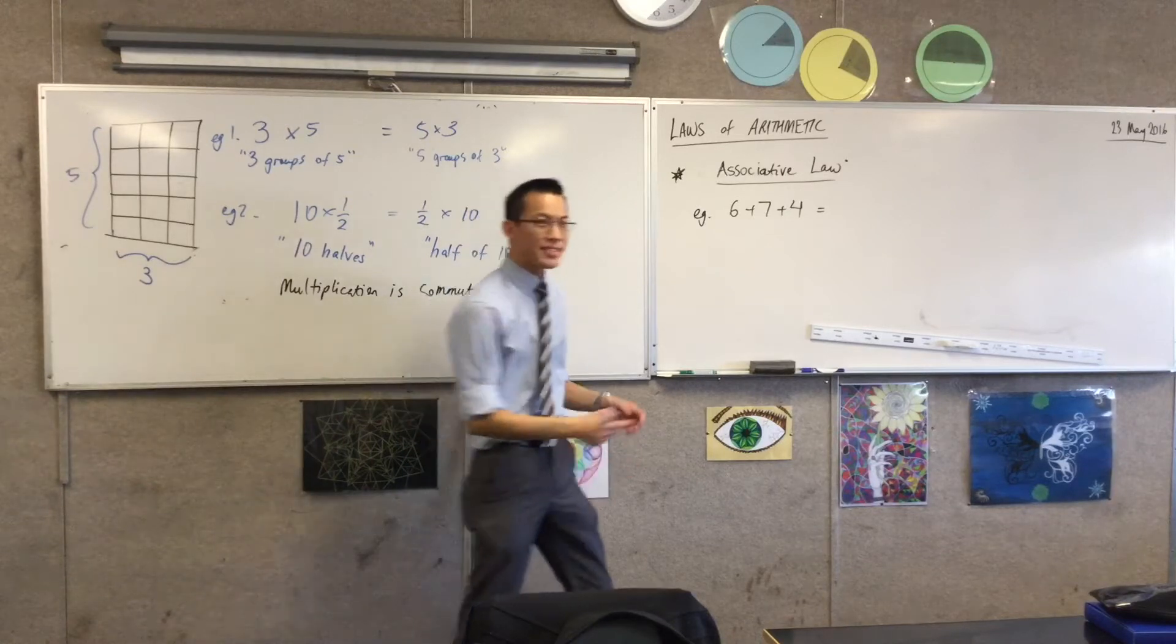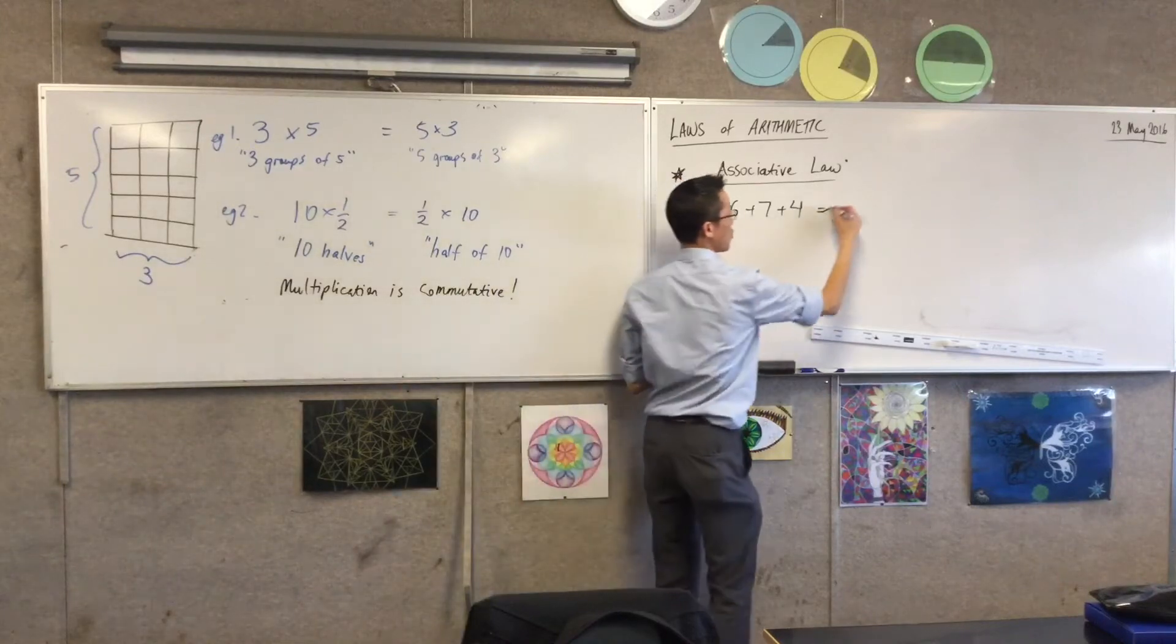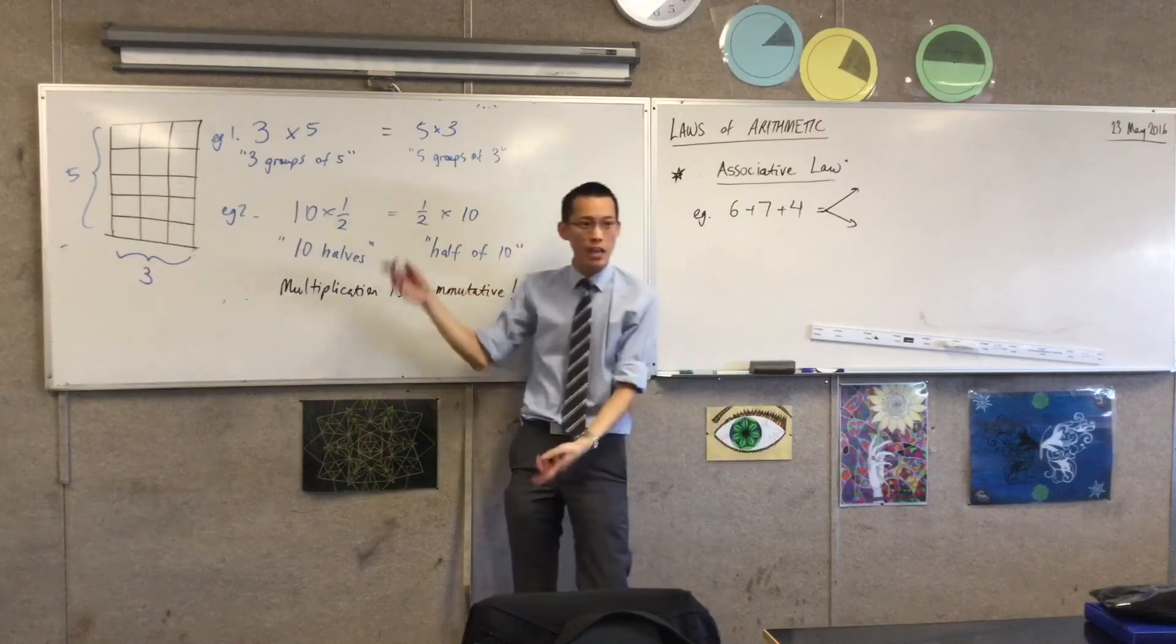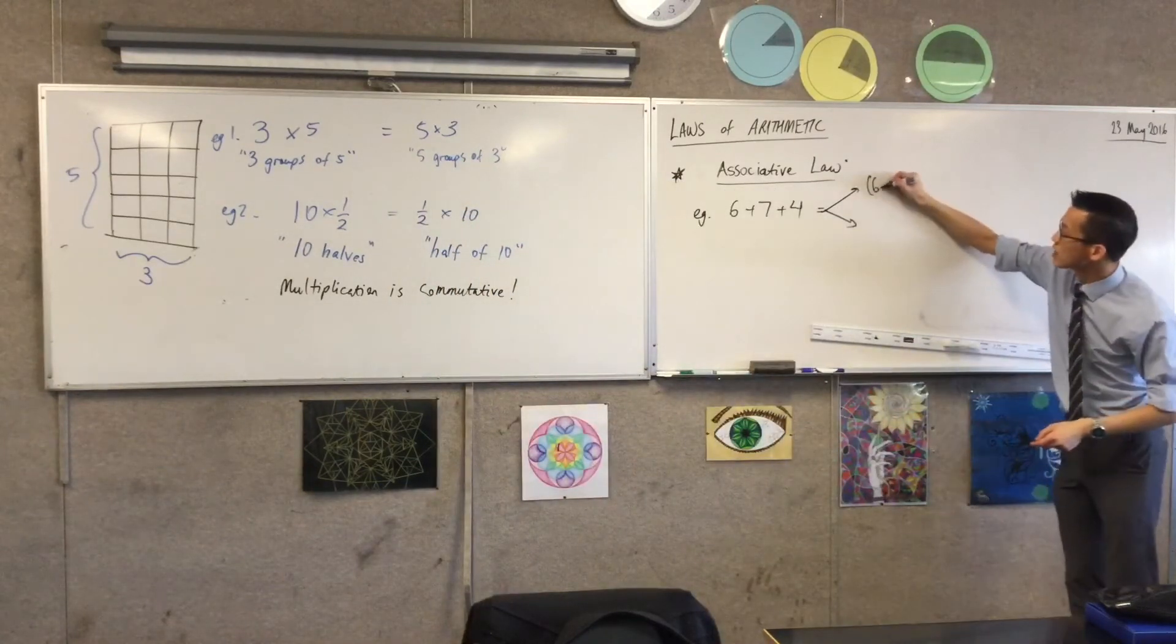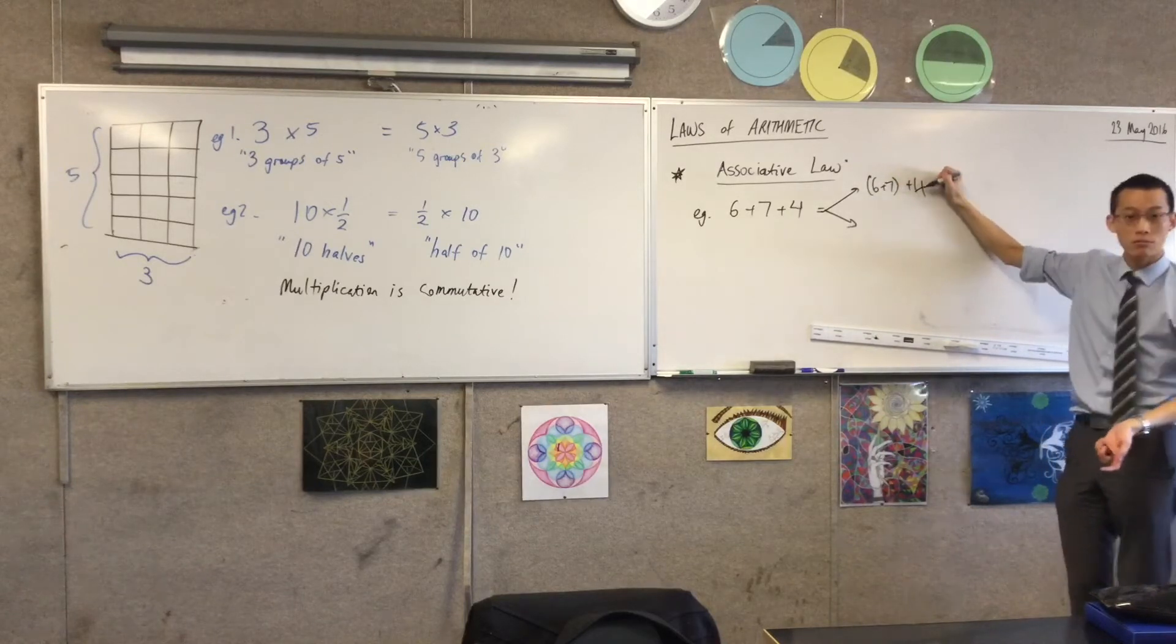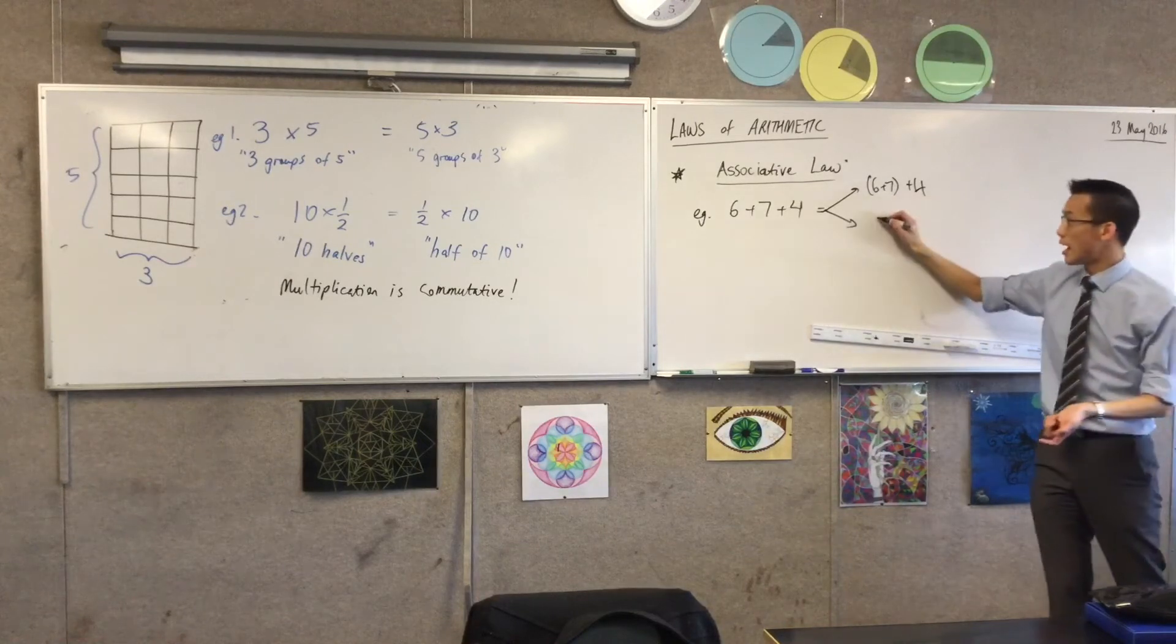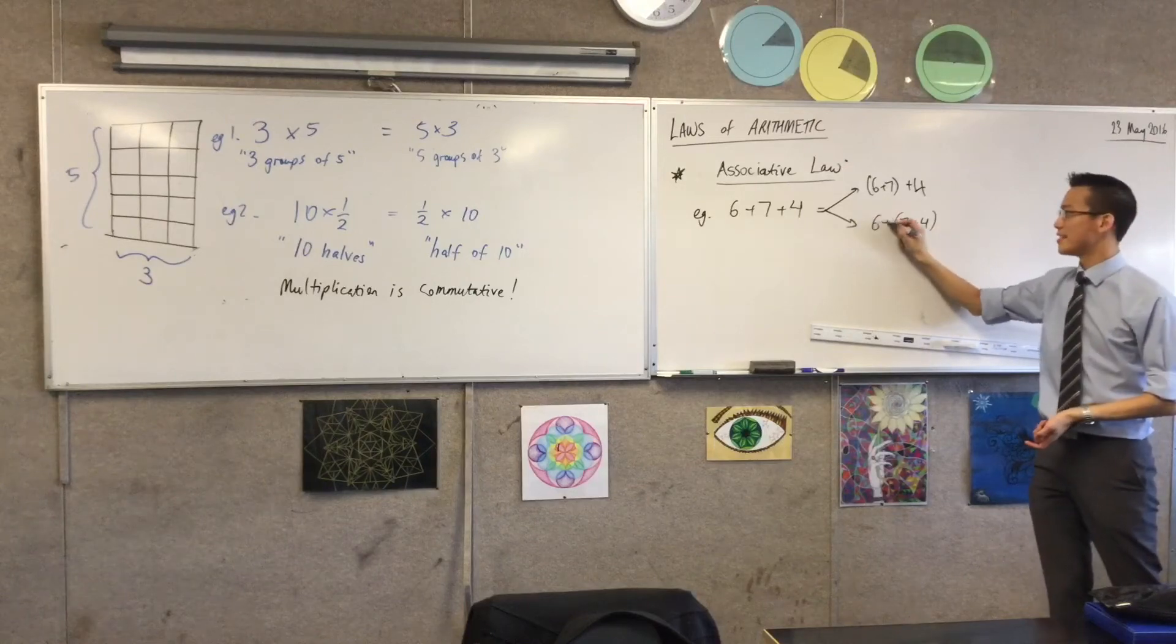Six plus seven. Now, interestingly, for addition, and maybe you want to put some arrows here for me. It doesn't matter. It doesn't matter. Just like we saw here, it's like, oh, I can get the same one no matter which one I do first. So I could do six plus seven first, which is 13, plus four, right? And you're going to get an answer. Or alternatively, I could do the seven plus four first if I wanted, and then add six.